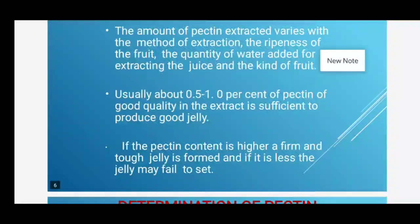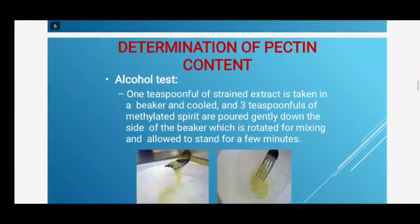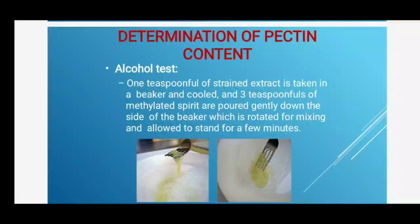The amount of pectin extracted varies with the method of extraction, ripeness of the fruit, quantity of water added for extracting the juice, and the kind of fruit. Usually about 0.5 to 1% pectin of good quality in the extract is sufficient to produce good jelly. If pectin content is higher, a firm and tough jelly is formed; if less, the jelly may fail to set. To determine pectin content, there are different tests.